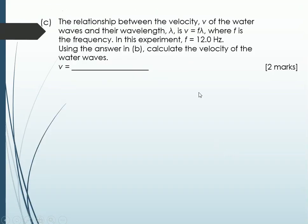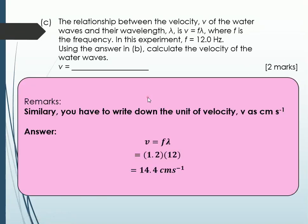Part C. The relationship between the velocity v of the water waves and their wavelength, lambda, is given by v equals to f lambda, where f is the frequency. In this experiment, f is 12.0 hertz. Using the answer in b, calculate the velocity of the water wave, 2 marks. Same as just now. All you have to do is write out the formula that is given to you in the question. Frequency of 12 is 12 hertz. Lambda from the previous question is 1.2. Therefore, speed is 14.4 centimeter per second. You do not need to change this to meter per second. The question is already given to you in centimeter. So you can just straight away use centimeter per second. So one mark for substitution, another mark for the answer and unit.